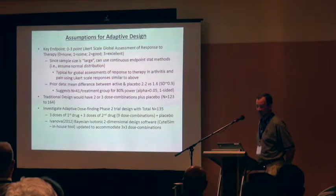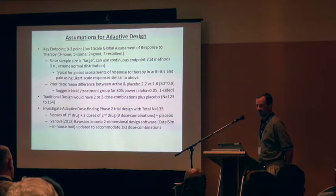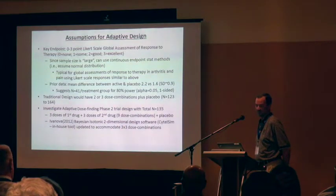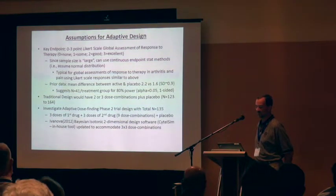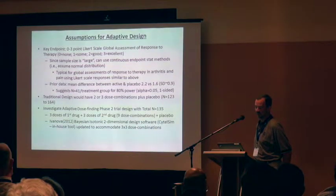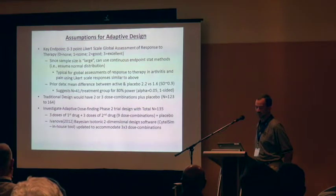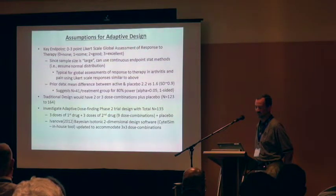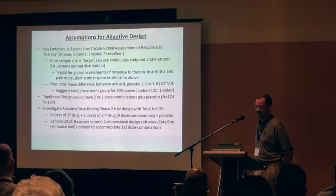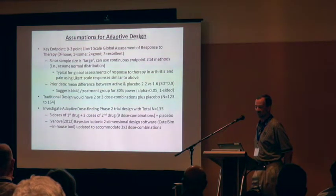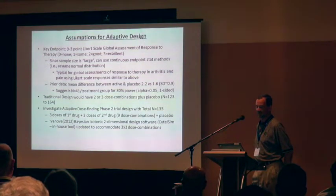Prior data suggested the mean differences targeted were 1.6 and 2.2, with a standard deviation of 0.9. Taking those values for a sample size to discriminate between two groups yields 41 per group. A traditional design would have probably only two to four dose combinations with a sample size of around 123 to 164 subjects.